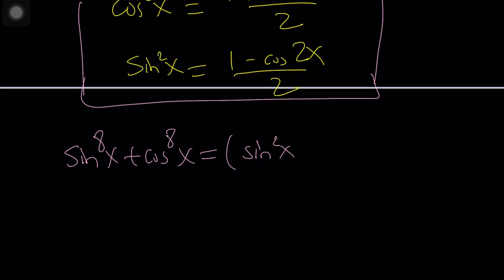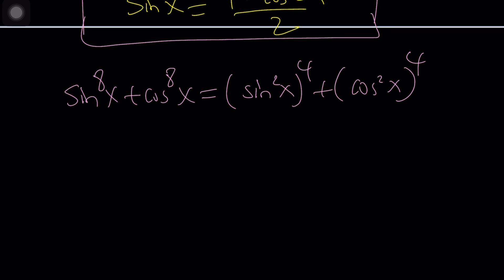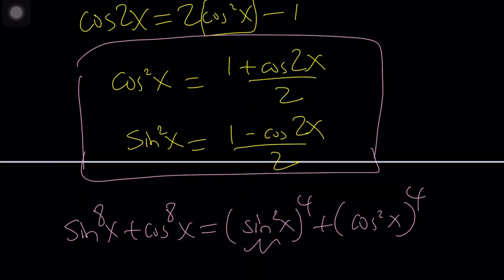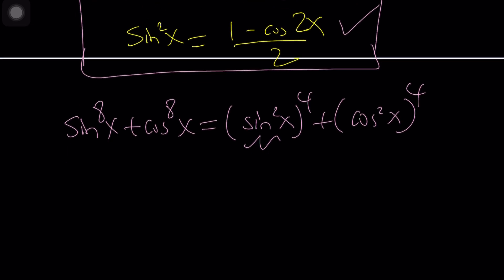What you can do now is take the eighth power and write it as second power to the fourth power, makes sense. And the same thing for cosine squared to the fourth power. And now sine squared is going to be replaced with something linear and then linear to the fourth is going to give you fourth powers.